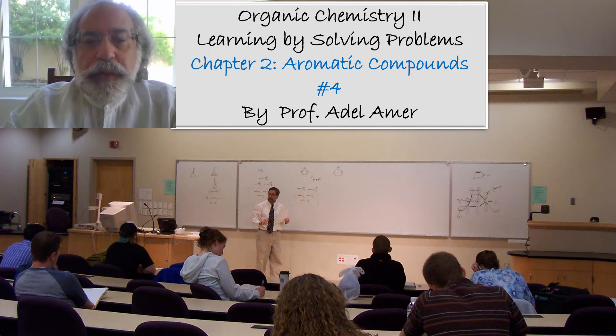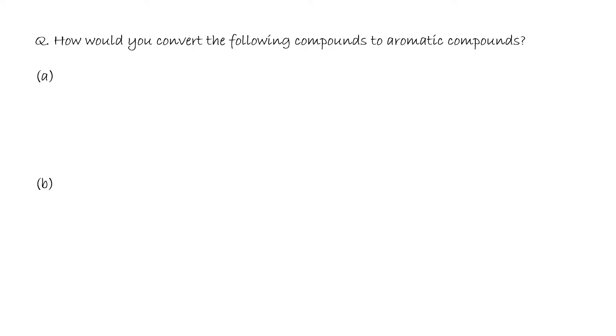Assalamu alaikum warahmatullahi wabarakatuh. Hello everyone, welcome to Learning by Solving Problem, Session 4, Chapter 2: Aromatic Compounds, Organic Chemistry 2. How would you convert the following compounds to aromatic compounds? Cyclopenta-1,3-diene—a five-membered ring with two pi electrons.